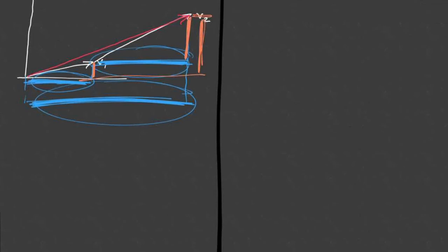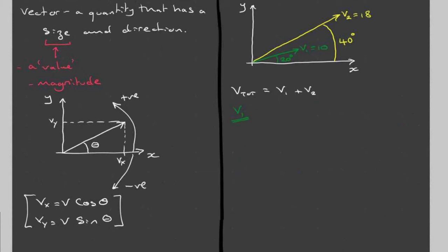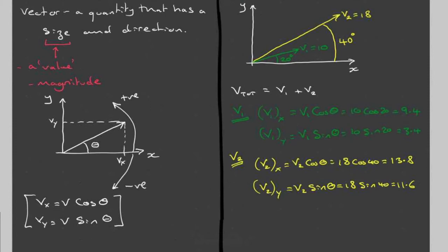For vector number one, the x component will be given by v1x is v1 cos theta, which is 10 cos 20, which is 9.4. The y component will be v1 sin theta, which is 10 sin 20, which is 3.4. We do the same for v2. The x component is v2 cos theta, which is 18 cos 40, that's 13.8. I'm expressing my answers to the first decimal place. And the y component is v2 sin theta, which is 18 sin 40, which is 11.6.